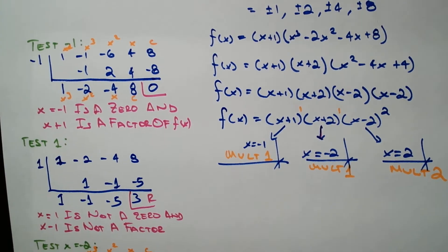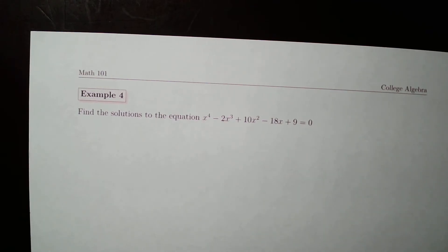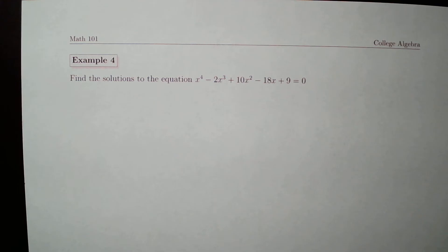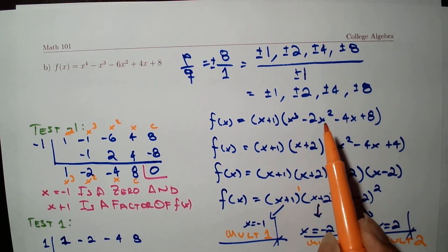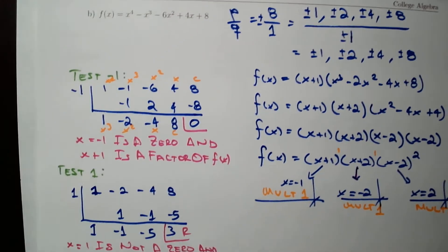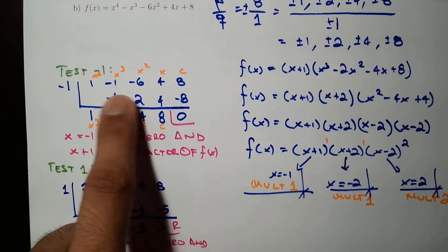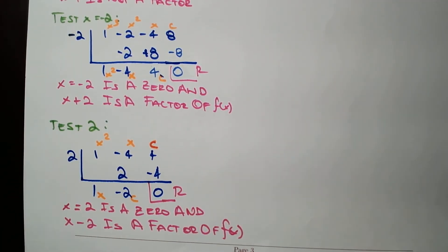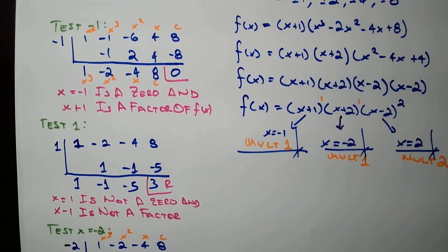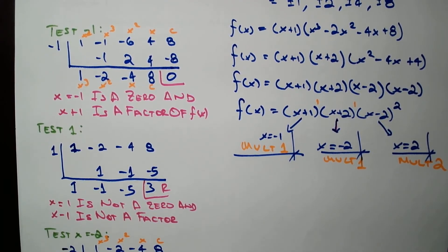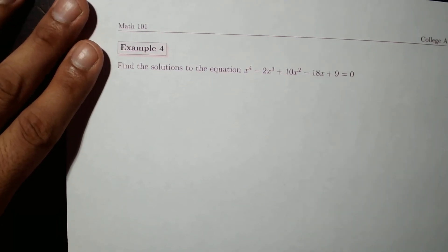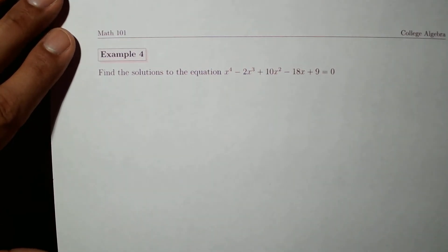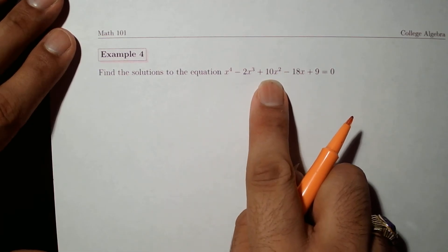On the next example I will be a bit more liberal about the process. On the previous example, even though from the very first depressed polynomial we could have factored by grouping and saved all that synthetic division work, it's good to see every iteration of finding a zero using synthetic division.